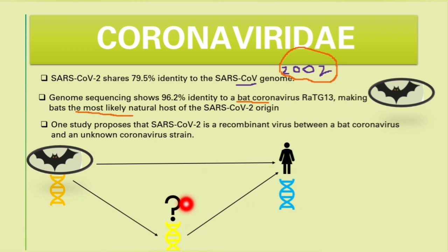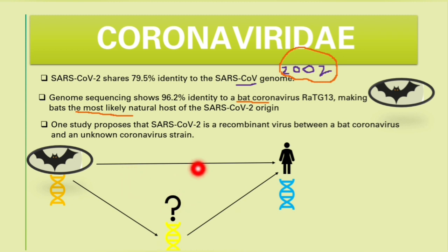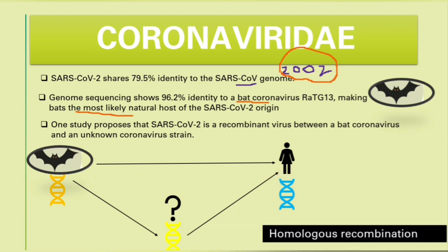Some sources earlier on suggested the intermediate host to be something like a pangolin or another animal that was at the wet market. This whole process of mutations until the virus is able to infect humans is known as homologous recombination.